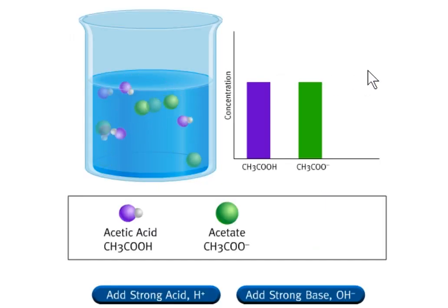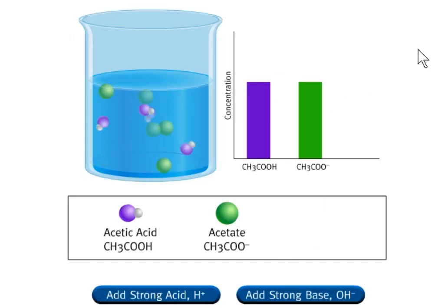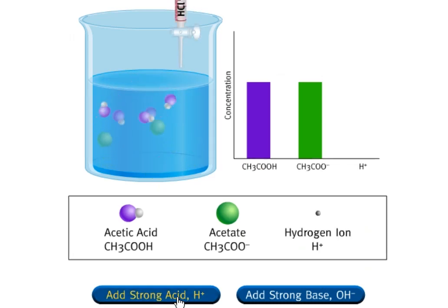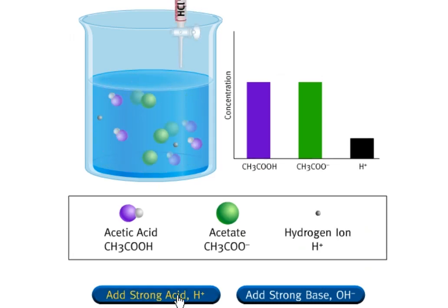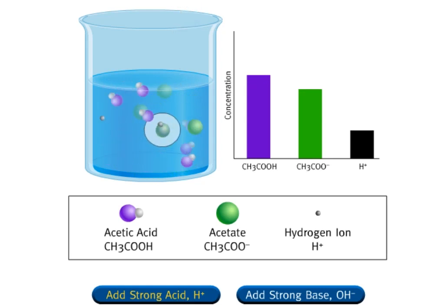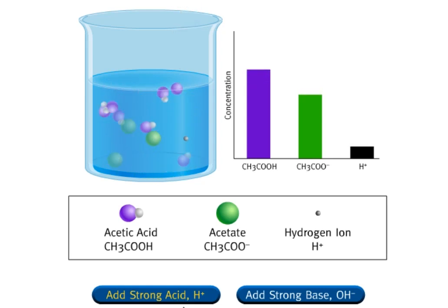A buffer is an aqueous solution containing both a weak acid and a weak base that are a conjugate. Only hydrogen ions, H+, from the hydrochloric acid are shown entering the solution. Chloride is not shown because it is a spectator ion — it does not participate in the reaction.